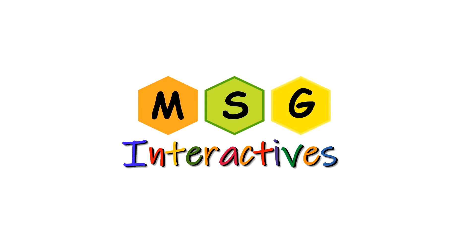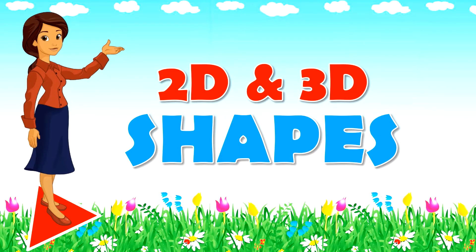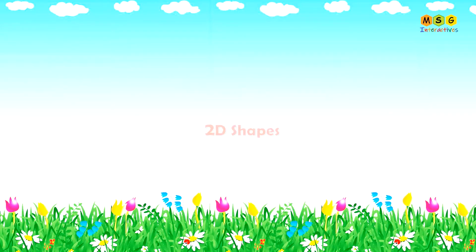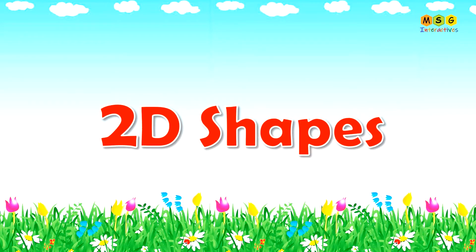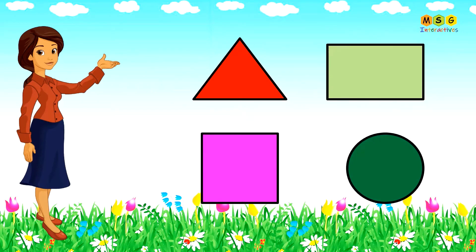MSG Interactives: 2D and 3D shapes. A shape or figure that has a length and a breadth is a 2D shape. Triangle, rectangle, square, and circle are 2D shapes.